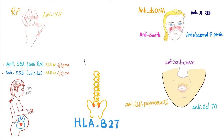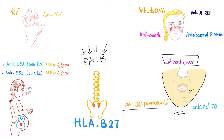The spondyloarthropathies can be summarized in the word PAIR: Psoriatic arthritis, Ankylosing spondylitis, Inflammatory bowel disease-related arthritis, and Reactive arthritis. Then there's scleroderma — look at the skin. Anti-centromere antibodies, anti-RNA polymerase 3, and anti-Scl-70. I've talked about all of these antibodies in individual videos, so please subscribe and save my rheumatology playlist.